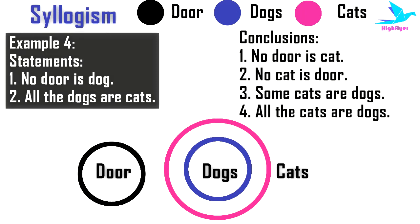Testing the conclusions: Conclusion 1, 'No door is cat' — definitely true, as door is an entirely different entity. Conclusion 2, 'No cat is door' — also true, as there is no relation between both. Conclusion 3, 'Some cats are dogs' — true, because cats is a much bigger circle than dogs, so not all cats are dogs, but definitely some cats are dogs. Conclusion 4, 'All cats are dogs' — false, since cats is a much bigger circle than dogs. Hence conclusions 1, 2, and 3 are true and conclusion 4 is false.